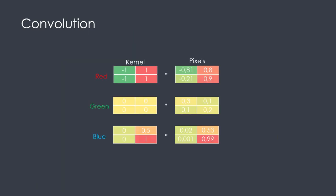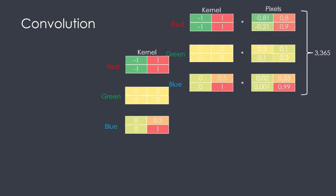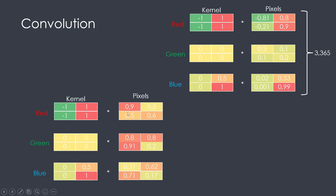But how can a kernel detect a feature? The kernel contains several parameters that will be trained by the neural network. Each element of the kernel will be compared to the pixels of the image. The closer you are to the kernel — like here where you have values that are very close — the stronger the signal will be. As the opposite, if you have pixels not close to the feature the kernel is looking for, you would get a poor signal.